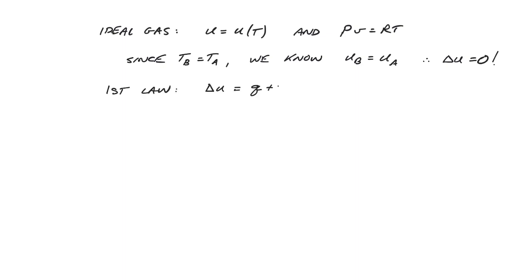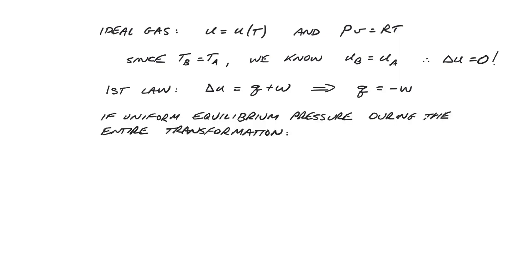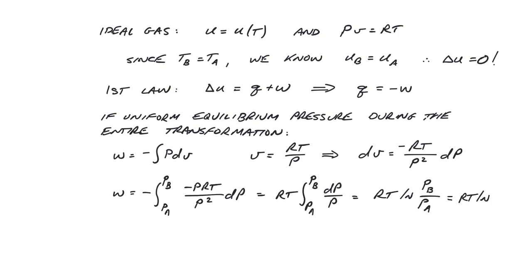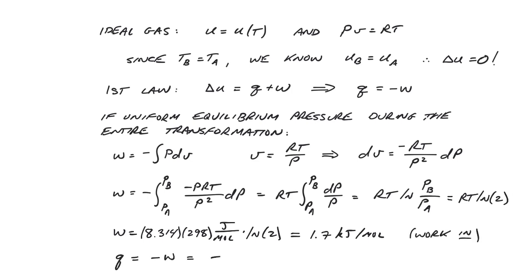If we now apply the first law, it says that the heat and work flows must be equal and opposite. If we assume the system was in an internal state of equilibrium along its transformation path, we can calculate the work per mole as an integral of minus P dV from state A to state B. Substituting the ideal gas law, we can solve this integral by calculating VA and VB and integrating — or re-express dV in terms of dP and integrate from PA to PB directly. Either way, we get W equals RT log 2. Plugging in numbers, the work required is 1.7 kJ per mole, which implies a heat input of negative 1.7 kJ per mole — equivalent to a positive output of heat. In other words, to accomplish this transformation we must add work and remove heat in equal measure.